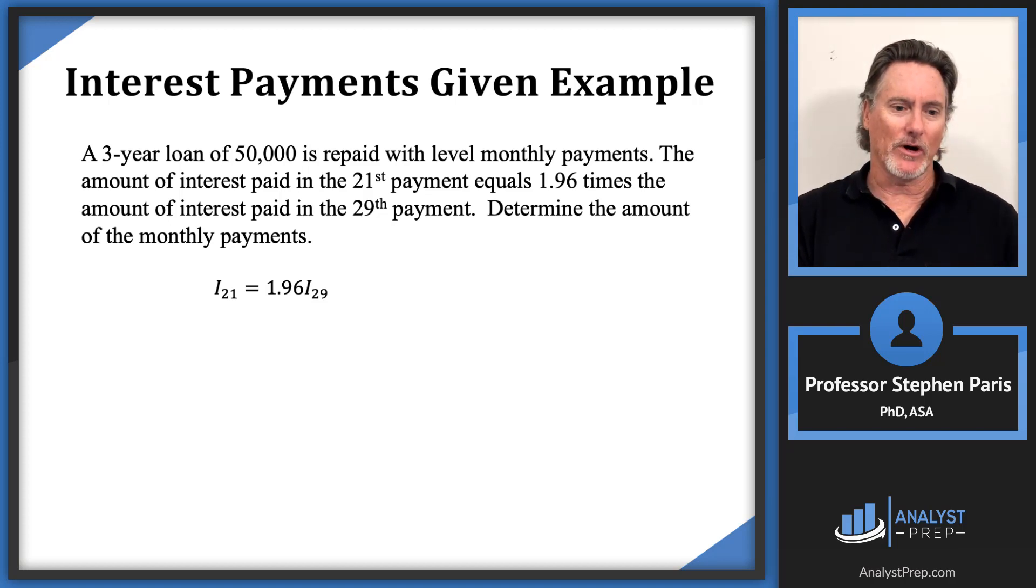Now think about how you calculate these I values. For instance, I sub 21, the way we would compute that is we would look at the balance at time 20 and then multiply that by the interest rate i. So I got i times B sub 20 for the left hand side. Right hand side I'd have 1.96 times I sub 29. The interest in the 29th payment I would calculate by taking the balance at time 28 and multiplying that by the interest rate i.